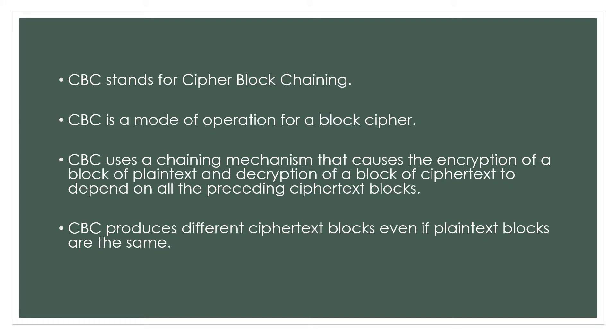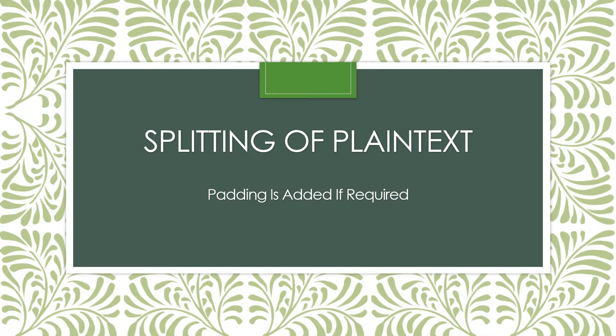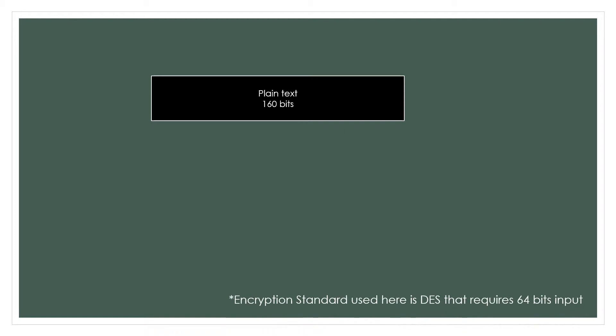Before encryption takes place, the plain text is split into blocks of fixed sizes depending on the size of the required input block for the type of encryption chosen. In cases where the block does not fulfill the required size, padding will be used. The example in this video has a plain text size of 160 bits and the encryption standard chosen is Data Encryption Standard, DES. DES requires an input block size of 64 bits and a key of 64 bits, which results in an output block of 64 bits.